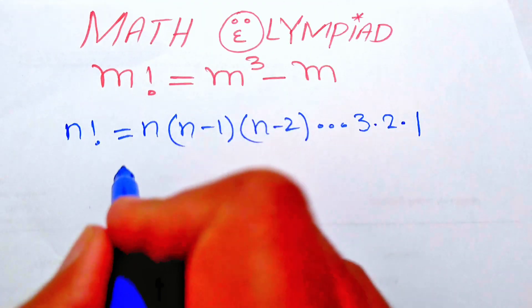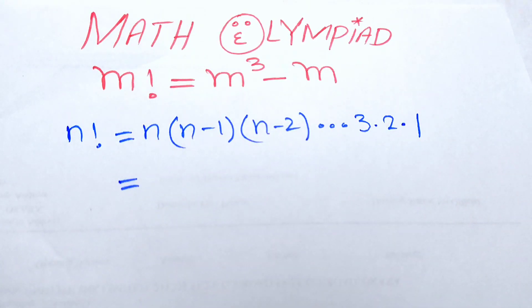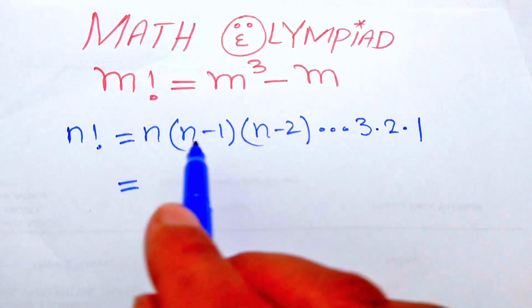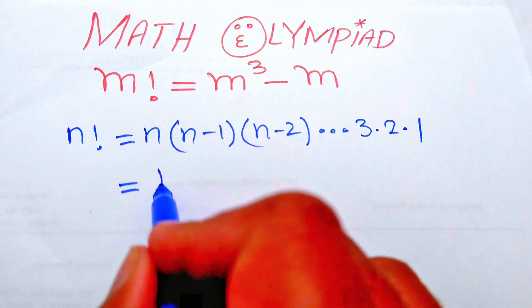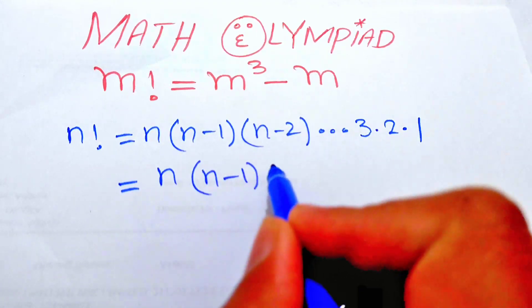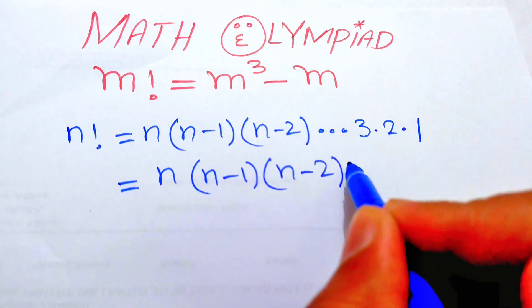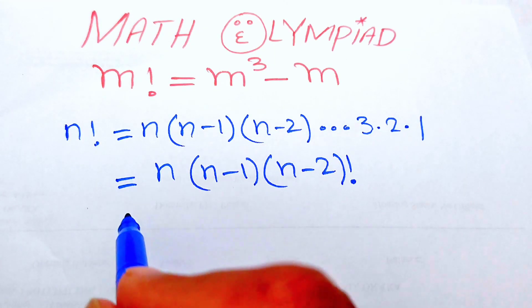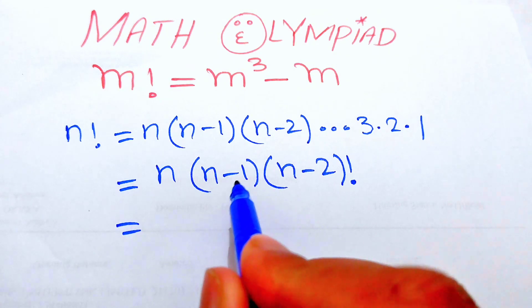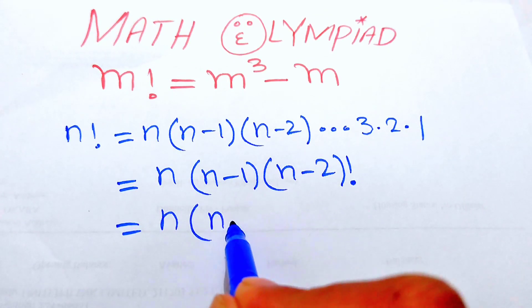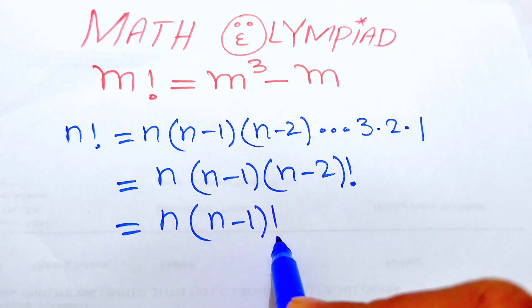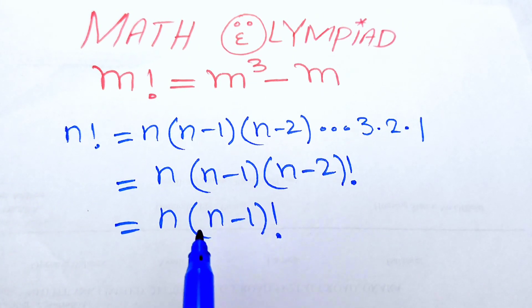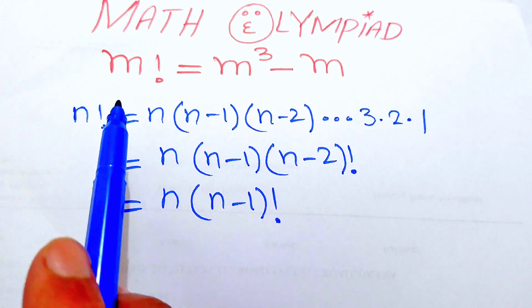We can break this product at any term. If we break the factorial product up to (n minus 2), we write it as n times (n minus 1) times (n minus 2) factorial. Similarly, if we break the product up to (n minus 1), we write it as n times (n minus 1) factorial. This means we can expand the factorial sign to any term we want. Now we focus on the left-hand side.